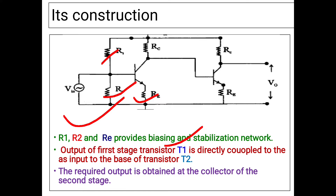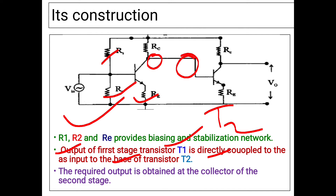If we don't use RE, then the biasing of the transistor will be disturbed. The output of the first transistor T1 is directly coupled to the base of the second transistor T2. The output obtained from transistor T1 is directly coupled to the input of the second transistor T2 without using any type of coupling method. The output of the second stage will appear at the collector terminal of the second transistor.